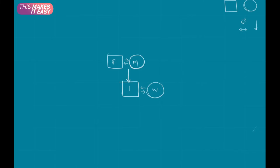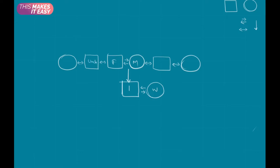My father will have brothers and sisters, and my mother will also have brothers and sisters. The brother of my father will be my uncle, and the sister will be my aunt. In the same way, the brother of my mother will be my uncle — but a maternal uncle — and similarly there will be a maternal aunt.